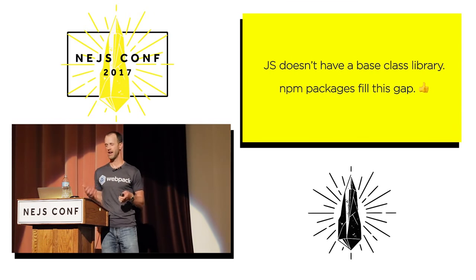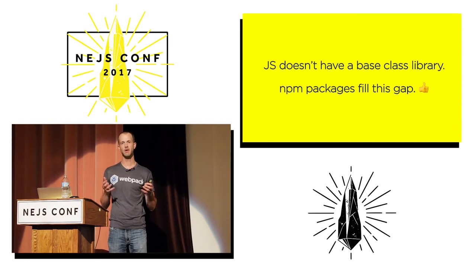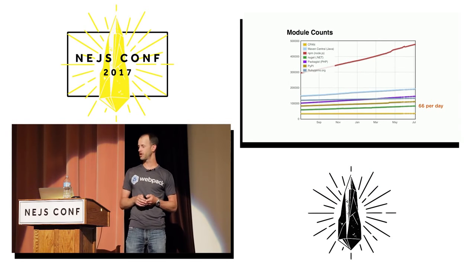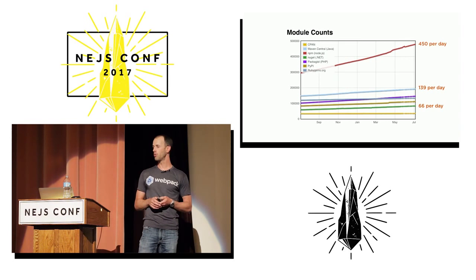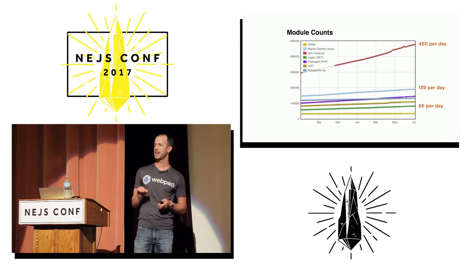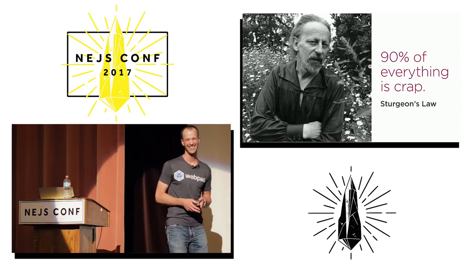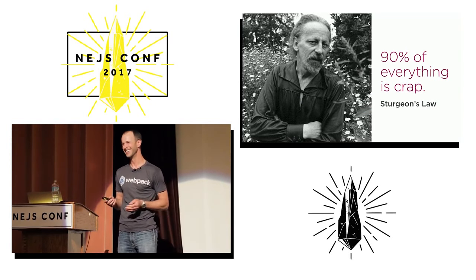JavaScript doesn't have a base class library, and because of that we're seeing NPM grow at an amazing rate. NPM has effectively filled in this gap and its growth has been unprecedented. Looking at the package growth comparison: .NET's NuGet adds 66 packages per day, Java adds 139 per day, and NPM — almost 500 packages are added every single day. By the end of the day another 500 things are out there.